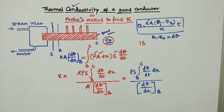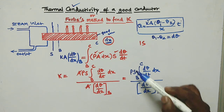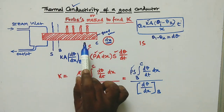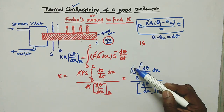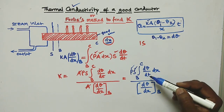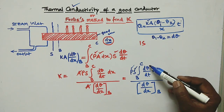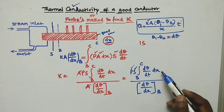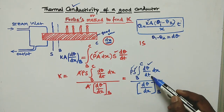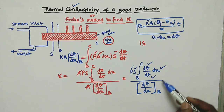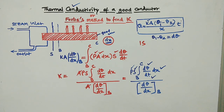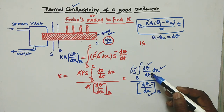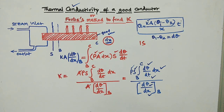Now, from this equation, we will measure ρ — the density — which depends on the material used. We also need dθ/dt, the rate of temperature change with time, and dθ/dx, the temperature gradient with distance. From these two measurements — temperature versus distance and temperature versus time — we can get two experiments to find K.